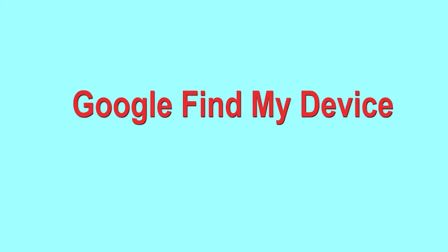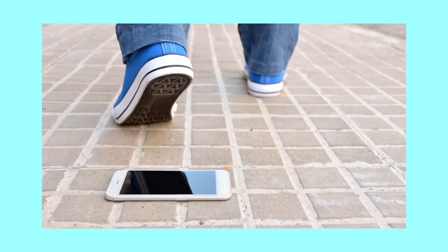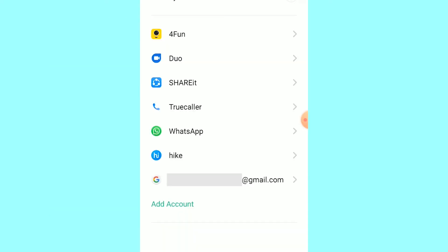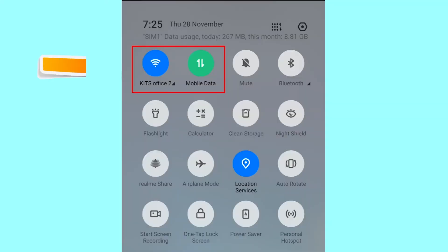Hard reset with Google Find My Device. This is the best method to reset your Android phone remotely. This method is useful when you lose your phone or are not able to access your mobile. This method also deletes all your Android phone data. After your device has been erased, you can't locate it. You can only use this method if you already added a Gmail account to your phone and have an active internet connection. If your device is offline, erasing will begin when it next comes online.